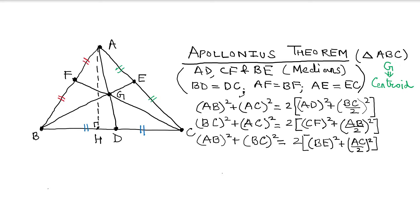I'm assuming that you have already seen the first session on Apollonius theorem, which talks about how to find out the lengths of the three medians of a triangle. Taking that discussion forward, I have written the same as in the earlier session: AB² + AC² = 2(AD² + (BC/2)²). This is the first equation. The median AD is formed by sides AB and AC, and since BD equals CD, we can write BD² or CD² as (BC/2)².